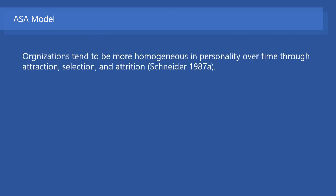The ASA model proposes that organizations tend to become more homogeneous in personality over time through attraction, selection, and attrition.